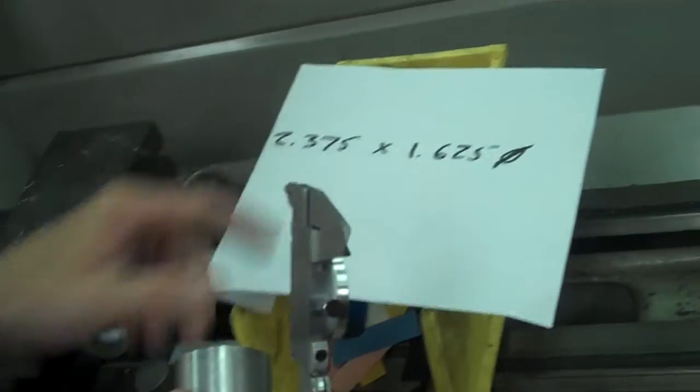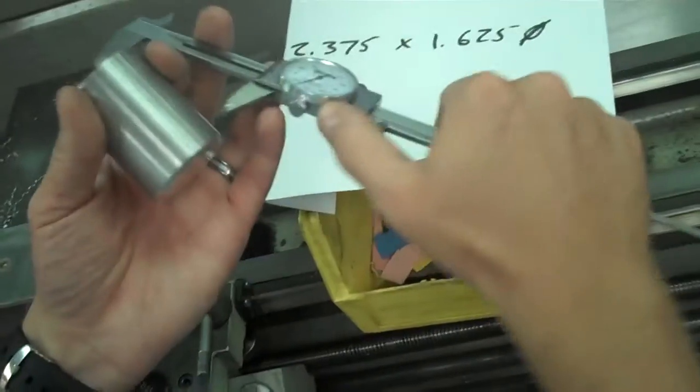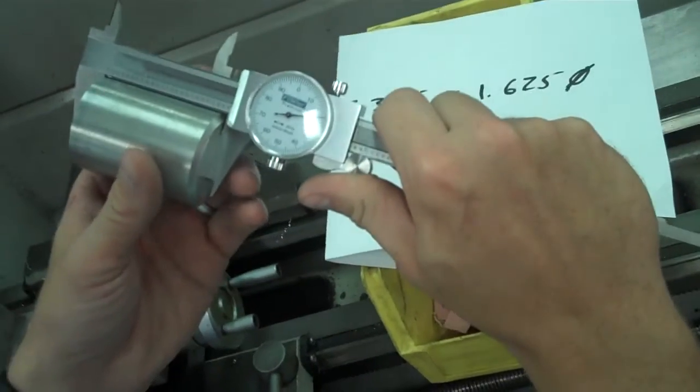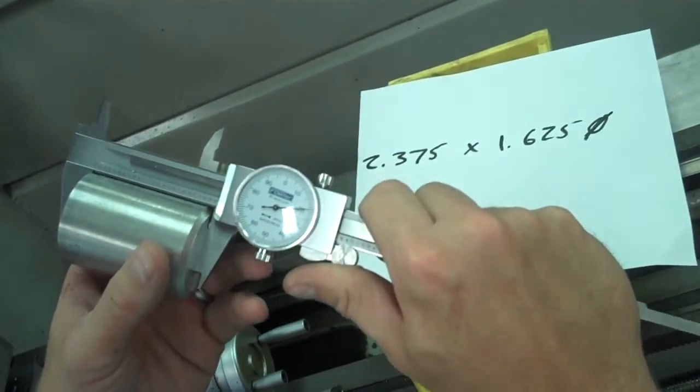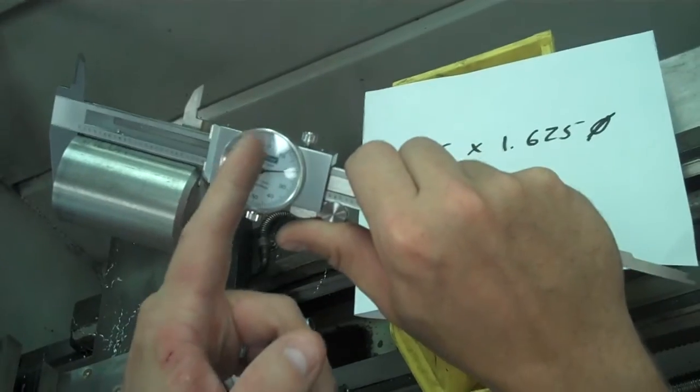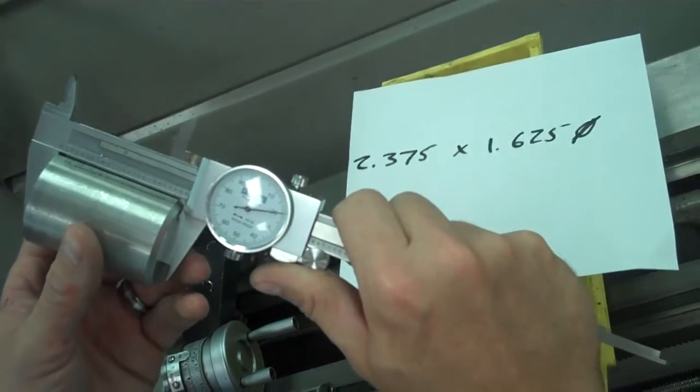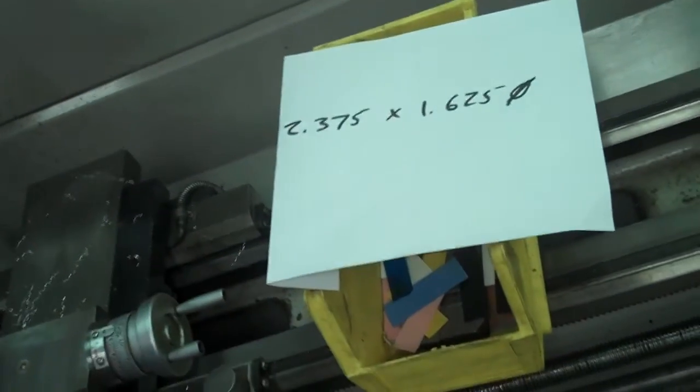I measure it and make sure that my caliper is all nice and zeroed. It is. Okay, I'm looking to get 2.375 in length, so I double-check it. Okay, I'm at 2.420. So in my head, I can do that. That's 25, 35, 45 thousandths I need to take off. So that's 0.045. So I'm going to put the part back in.